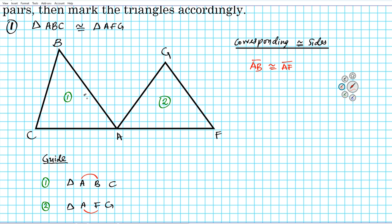Let's mark it on the triangle: AB, this side right here, is congruent to AF, this side right here — one tick mark each to indicate they're the same measure. Moving along to the next pair of congruent sides: going with the next letters, BC and FG are congruent sides. So segment BC is congruent to FG — let's mark it on the triangle with two tick marks each.